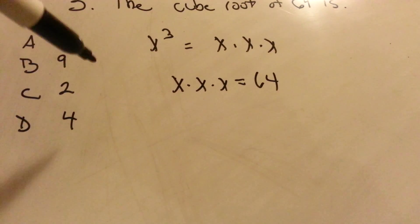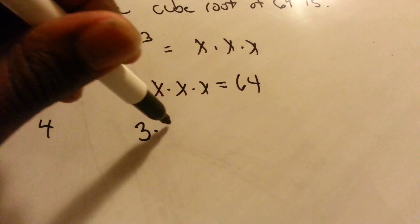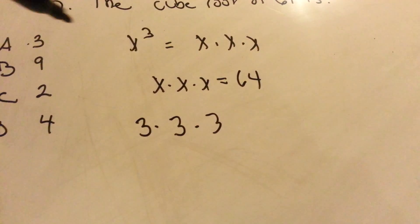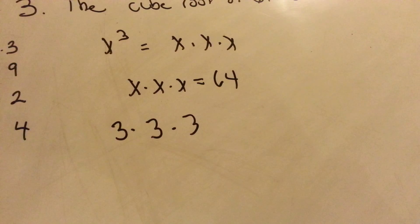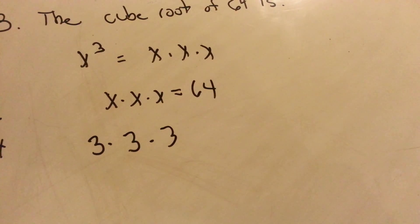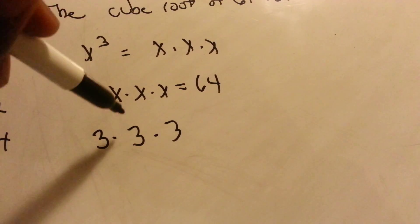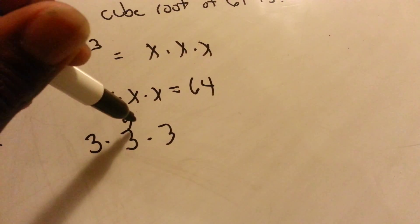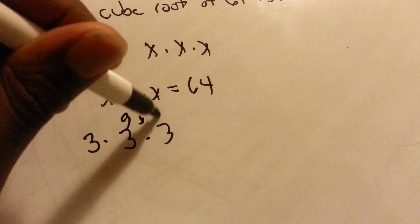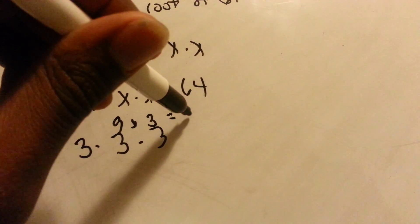You could do guess and test, and do three times three times three. I can tell you that's not going to equal 64, but we can try it out. Three times three equals nine. Nine times three equals 27.